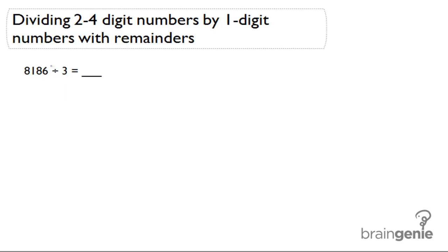Here we have 8,186 divided by 3, and we want to find out what the quotient is. I'm going to write this in another way.